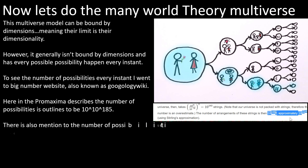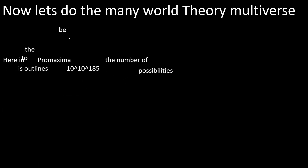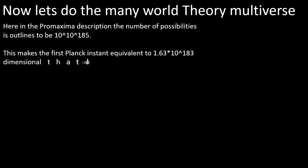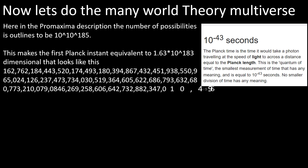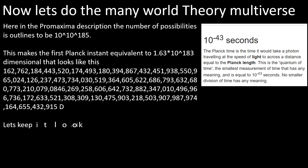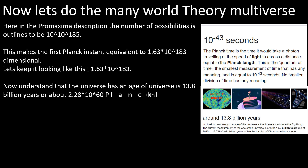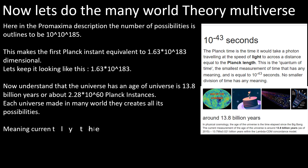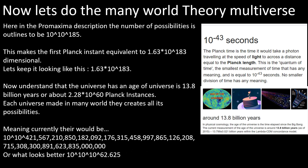There is also mention of the number of possibilities created by our universe on that page. However, this number didn't account for how each new universe has its own possibilities. This makes the first Planck instant equivalent to 1.63 × 10^185 dimensions. The universe has an age of 13.8 billion years, or about 2.28 × 10^60 Planck instances. Each universe made in mini world theory creates all its possibilities, meaning currently there would be 10 to the power of 10 to the power of 421 novemdecilion — or more cleanly, 10^(10^(10^62.625)). Let's just call it infinite dimensional.